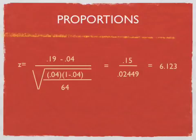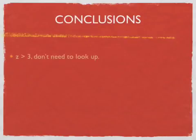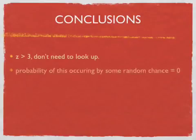So what can we conclude? If a z-score is greater than 3, don't need to look it up. We know that's a really big z-score. The probability of this occurring by some random chance is basically 0. The p-value we would express is less than 0.001. This is not occurring by some random lucky chance that all these Catholic schools got in the NCAA Tournament.